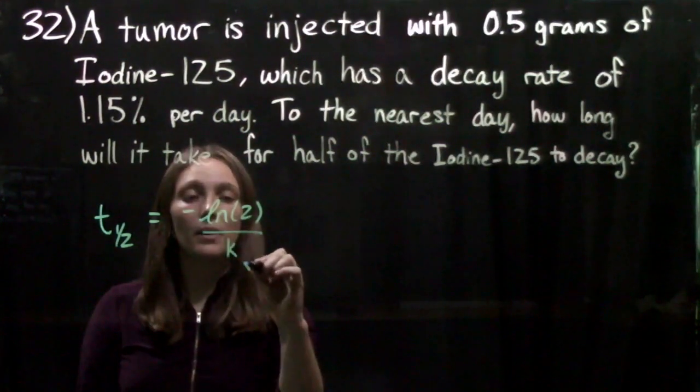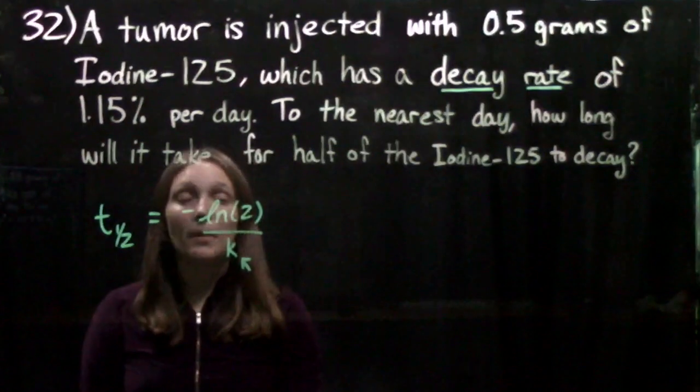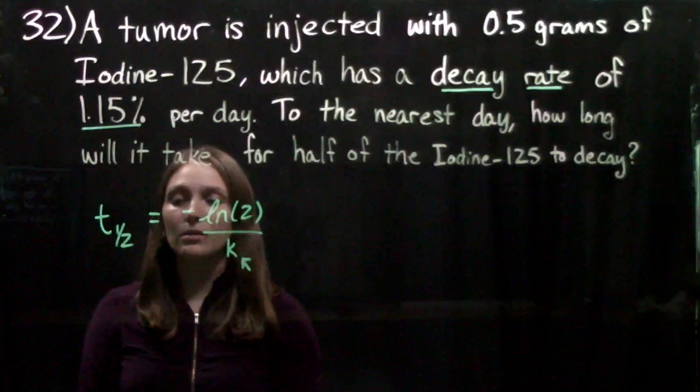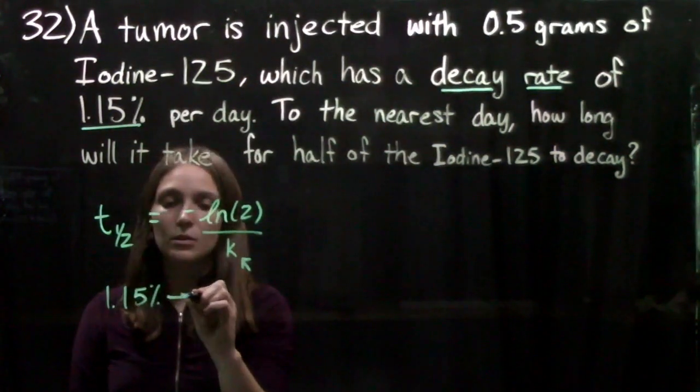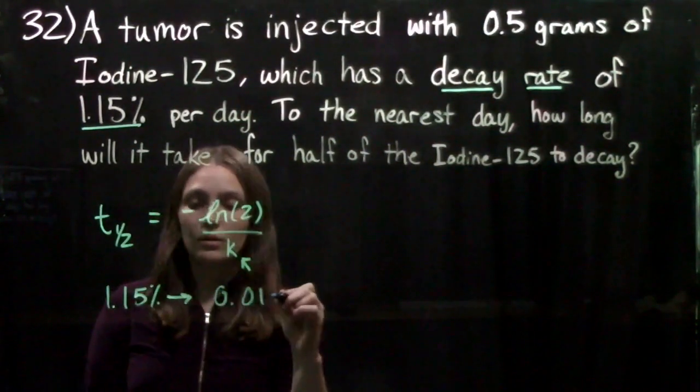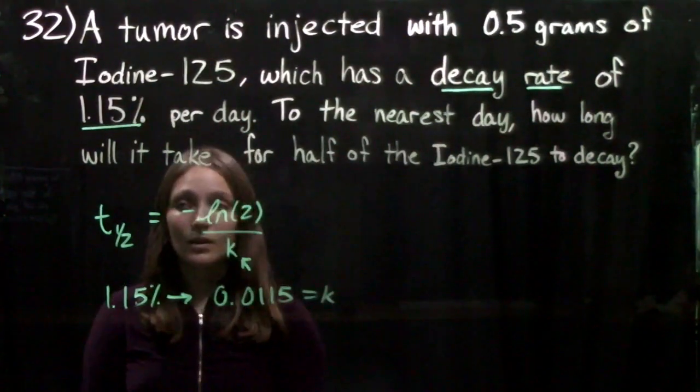We have to make sure that this is actually as a decimal, so if the problem gives it to us as a percent, we're going to convert that 1.15 percent to a decimal, which is going to be 0.0115. So that's going to be our k.